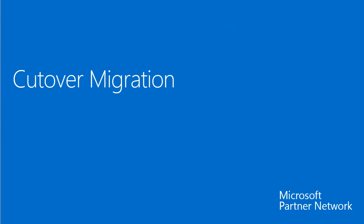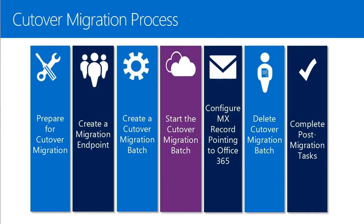Let's start with the cutover migration. Cutover migration is the least complex of these three kinds. Here you can see a typical process flow. Starting from the left, the first three steps are preparation tasks. The actual migration, where data is synchronized, happens in the fourth step. The rest is a not-too-time-consuming sequence of additional tasks, which I will explain in more detail in the next slides.